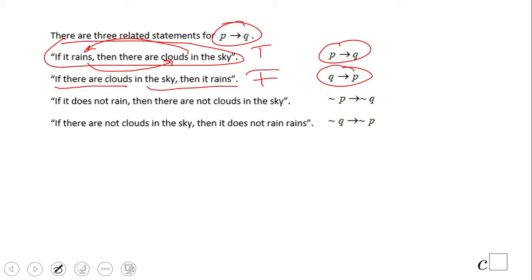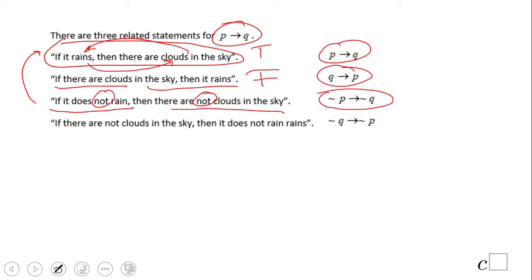This one here is the inverse — the same as the original but with negation applied to both parts: non-P then non-Q. If it does not rain, there are no clouds in the sky. Is that a true statement? No, it's false — if it doesn't rain, it doesn't mean there are no clouds. It can be a cloudy day.